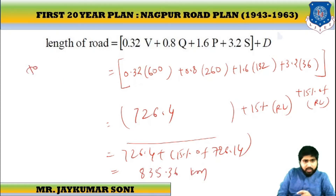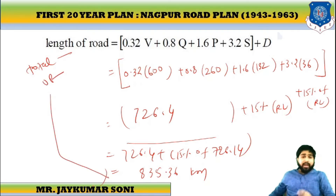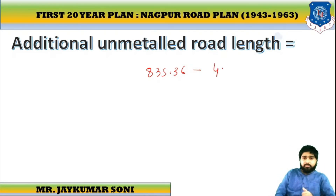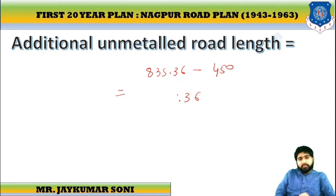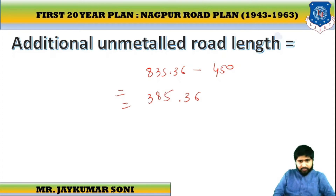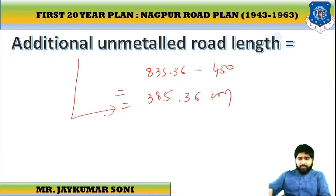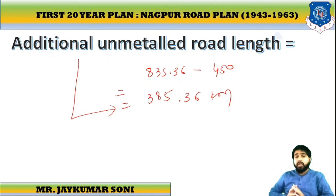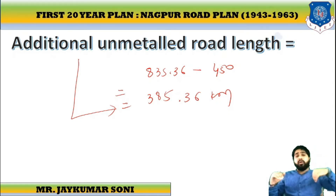This is the total length of unmetal road: 835.36 km. The existing unmetal road length is 450 km. So additional unmetal road = 835.36 − 450 = approximately 385 km. What we are doing is total minus existing to get the additional required metal and unmetal road length. That completes the first example.